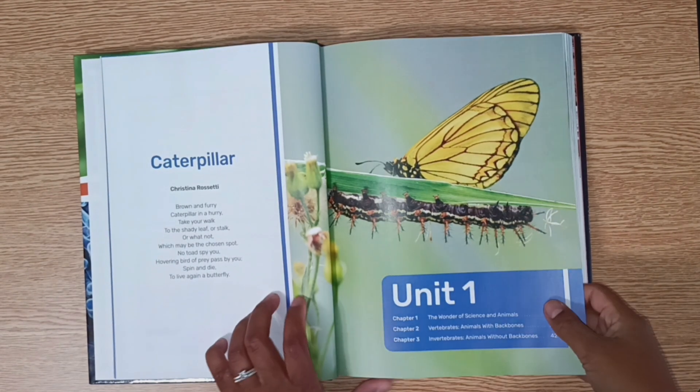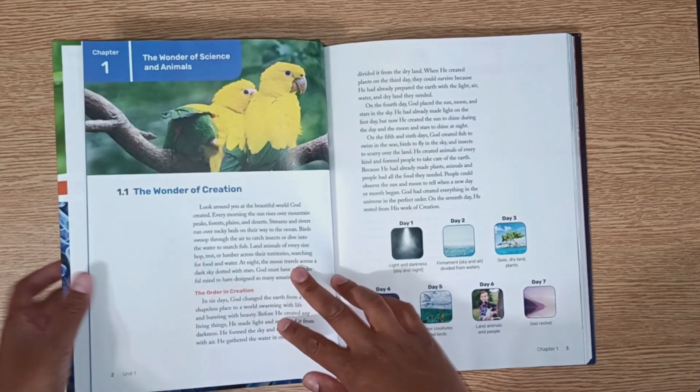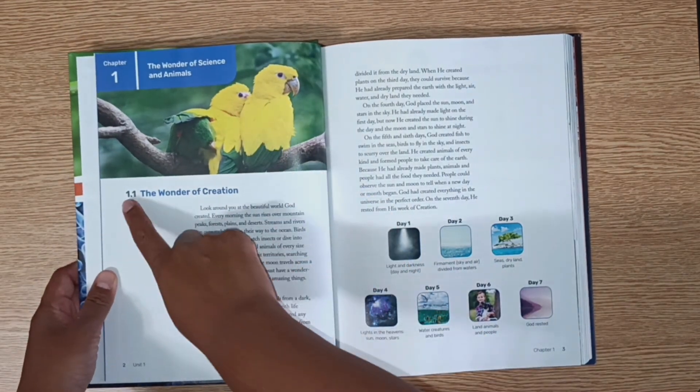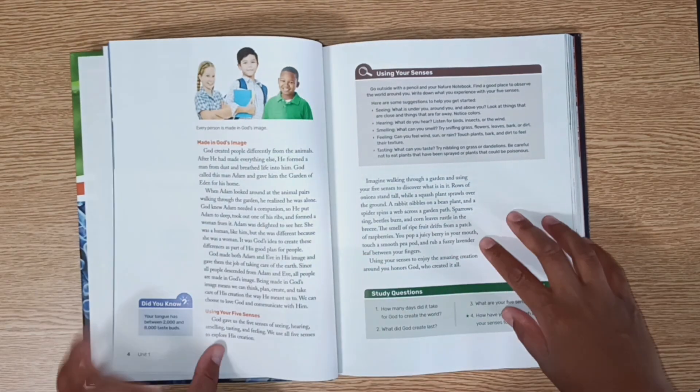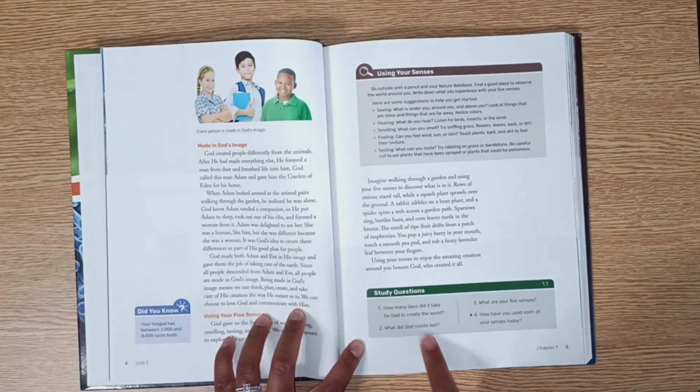Here is an example of a typical reading. This is the very beginning of the book. Chapter 1, The Wonder of Creation. There's four pages of reading and some study questions.